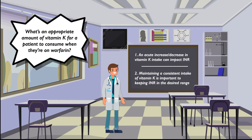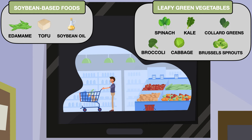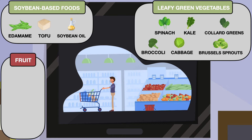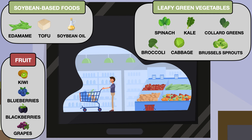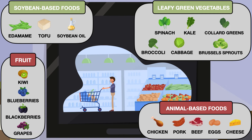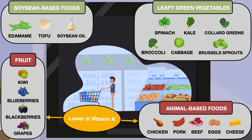Major sources of vitamin K are leafy green vegetables and soybean-based foods. This includes, but is not limited to, spinach, kale, collard greens, broccoli, cabbage, brussels sprouts, edamame, tofu, and soybean oil. All fruits are much lower in vitamin K; the only fruits that appear on food lists for vitamin K are kiwi, blueberries, blackberries, and grapes. Vitamin K also appears in some animal-based foods like chicken, pork, beef, eggs, and cheese, but in lower amounts than leafy greens and soybean-based foods.